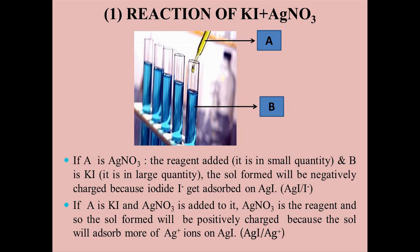Suppose we are taking silver nitrate solution and it is added to potassium iodide. Here, silver nitrate becomes A, that is the reagent. The precipitated silver iodide adsorbs iodide ions from the dispersion medium, and a negatively charged salt is the result. We get AgI/I⁻ because iodide ions are more in the solution.